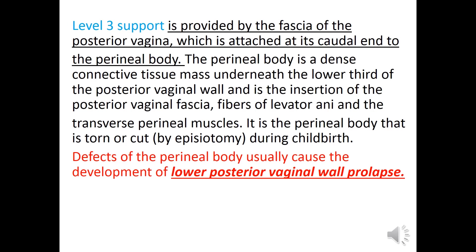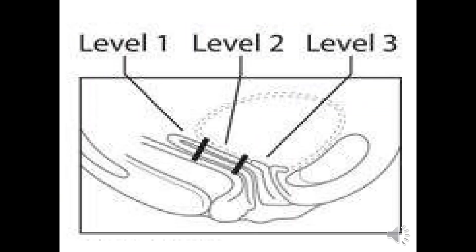Level 1 defects involve the uterosacral ligaments, leading to vault prolapse. Level 2 defects involve the bladder and rectum. Level 3 defects involve the perineal body.